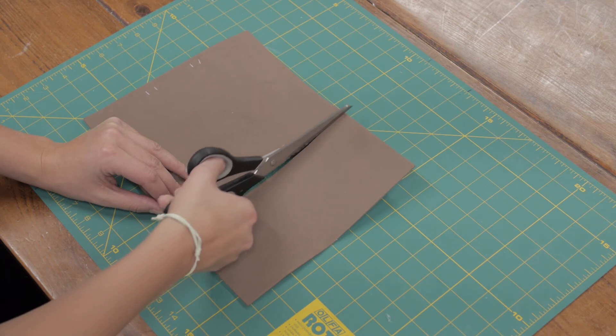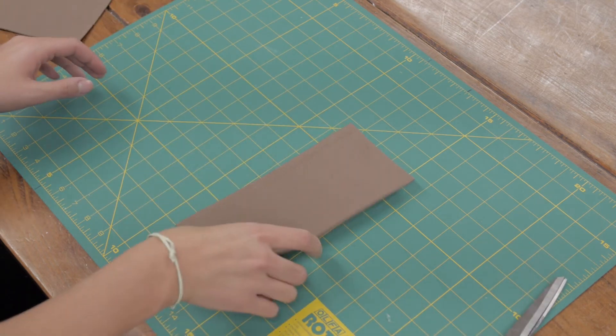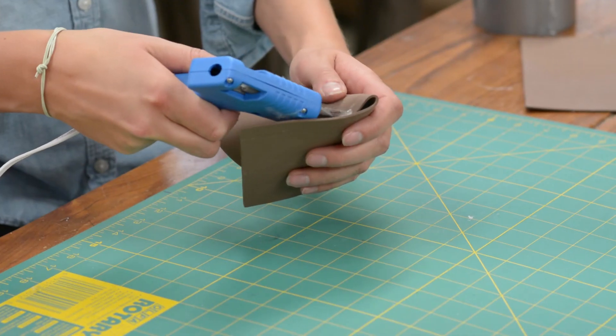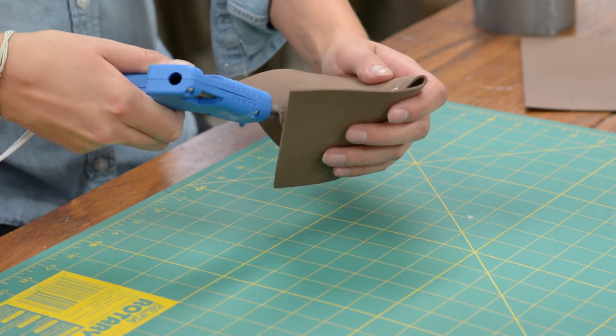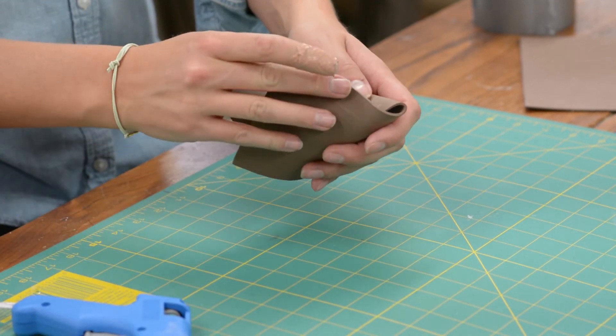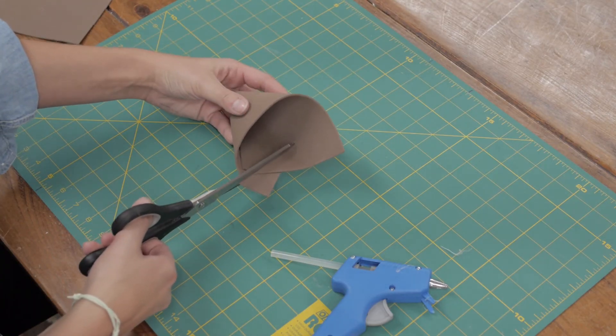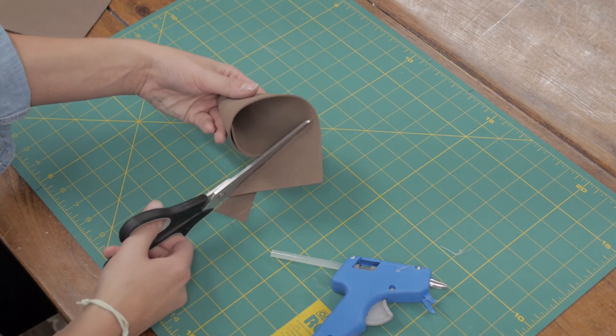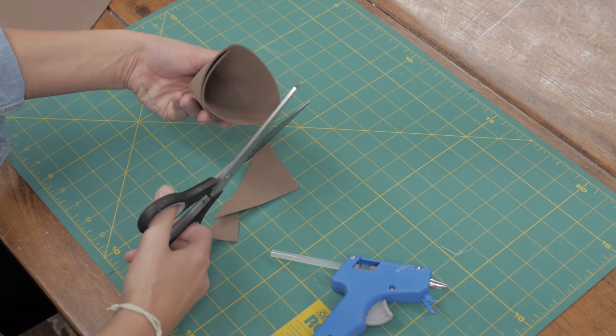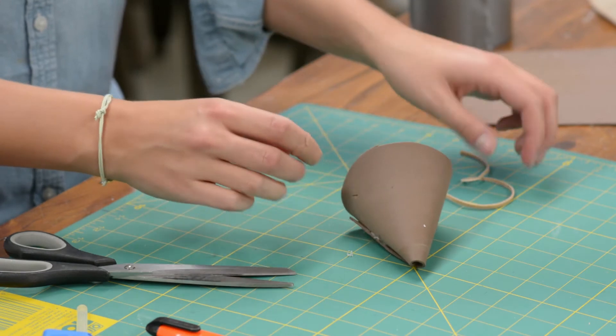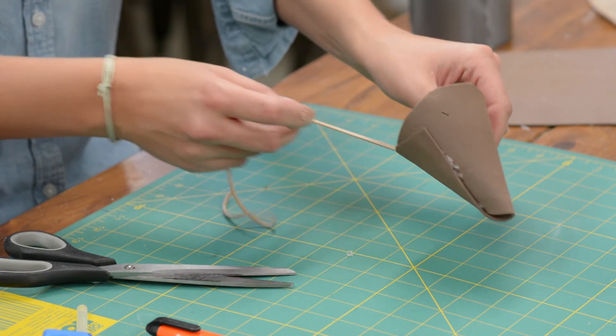To make the beak, take your brown foam board or felt and cut out a strip about a few inches wide. Then fold it into a cone shape and glue it together. Cut off the excess so that it's all even on the bottom, then carefully cut a hole on either side of the beak.